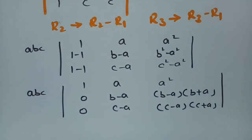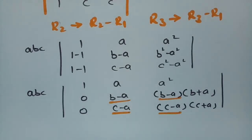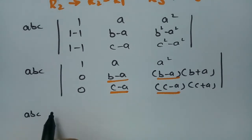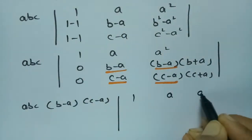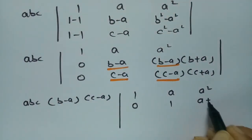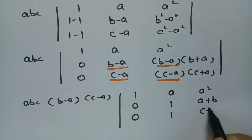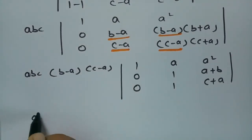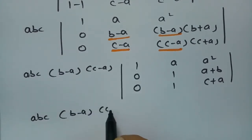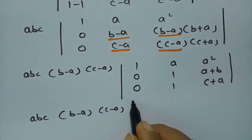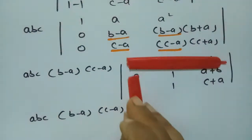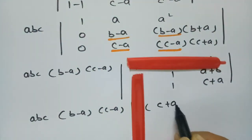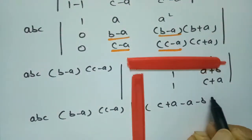Taking (b−a) common from row 2 and (c−a) common from row 3, the determinant becomes abc(b−a)(c−a) times: 1, a, a² / 0, 1, (a+b) / 0, 1, (c+a). Now I evaluate this 3×3 determinant by expanding along column 1.